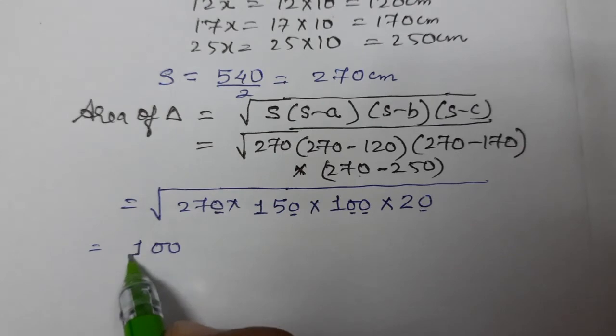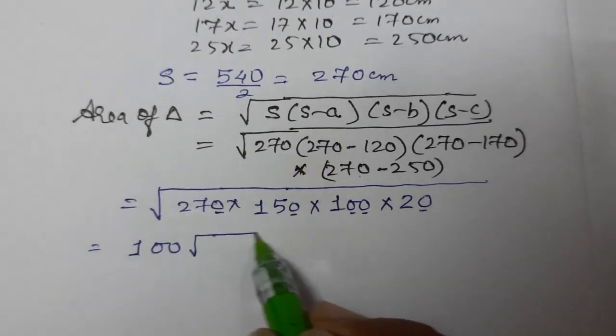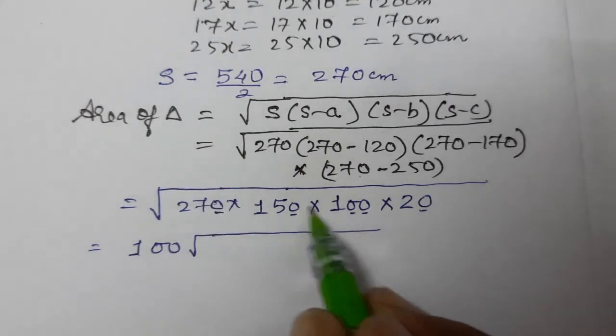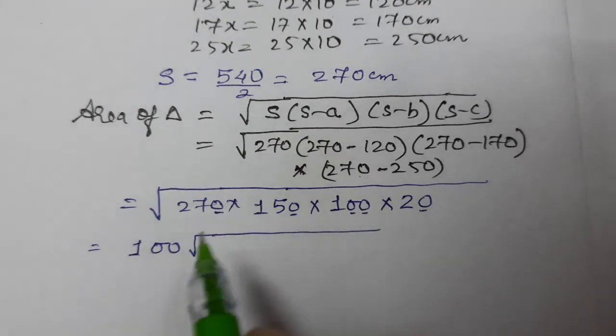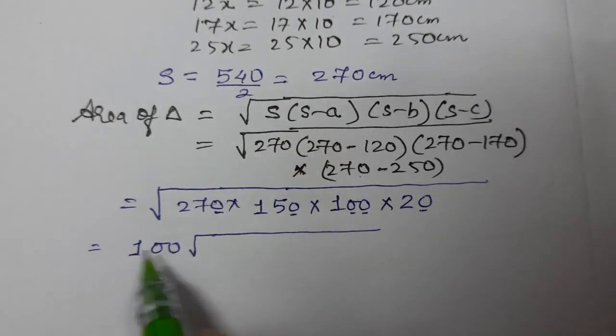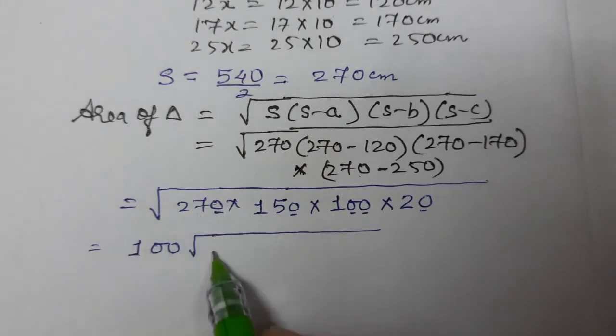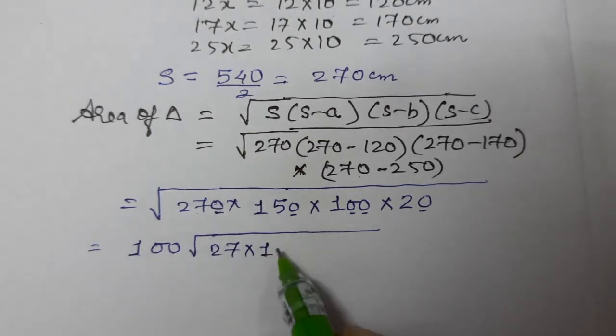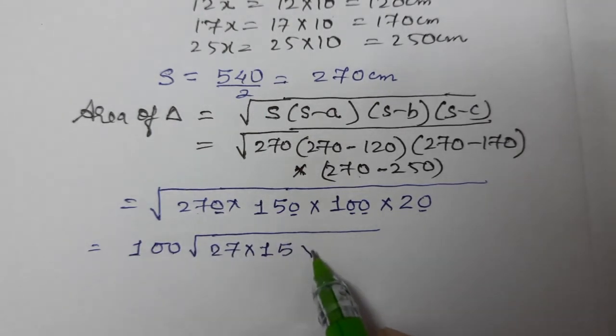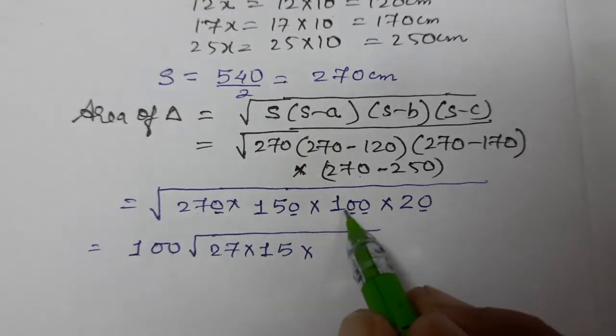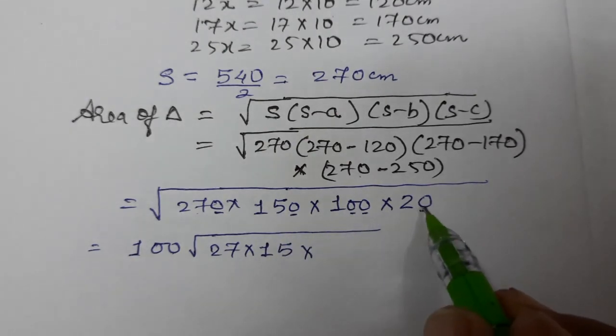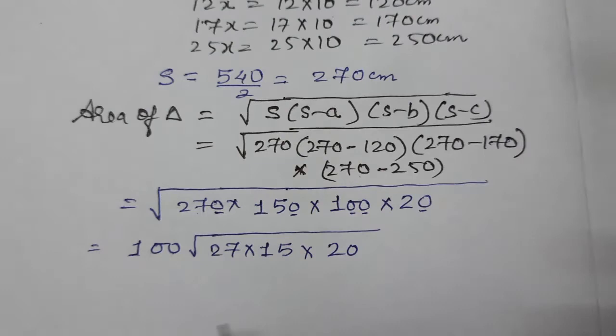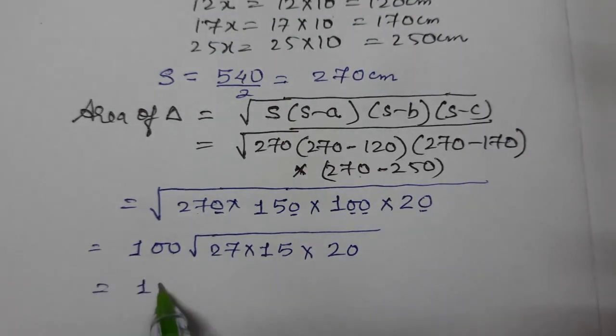So we have under root with these values. It means 4 zeros will come out, so take out 4 zeros and the answer will be 100 times square root of the remaining.